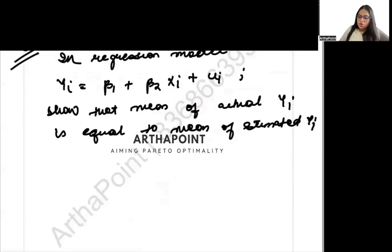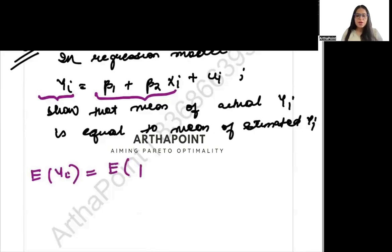Let us try to see this thing. So basically, this is very simple to be proved. If you try to see this part, this part is yi hat. And if you look at this part, this is yi. So I will start with the expected value of yi. And the expected value of yi will be E of beta 1 plus beta 2 xi plus ui.